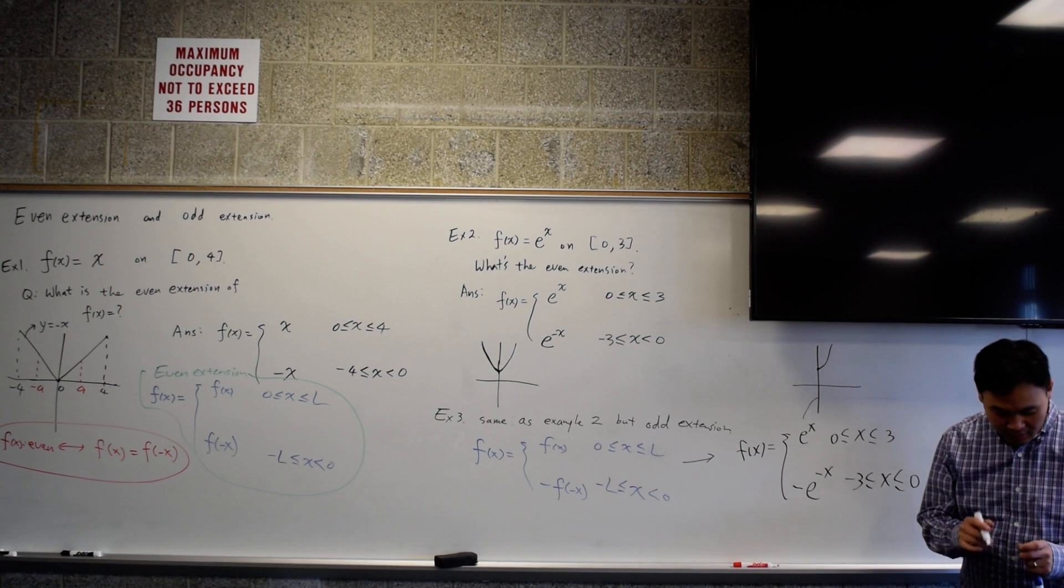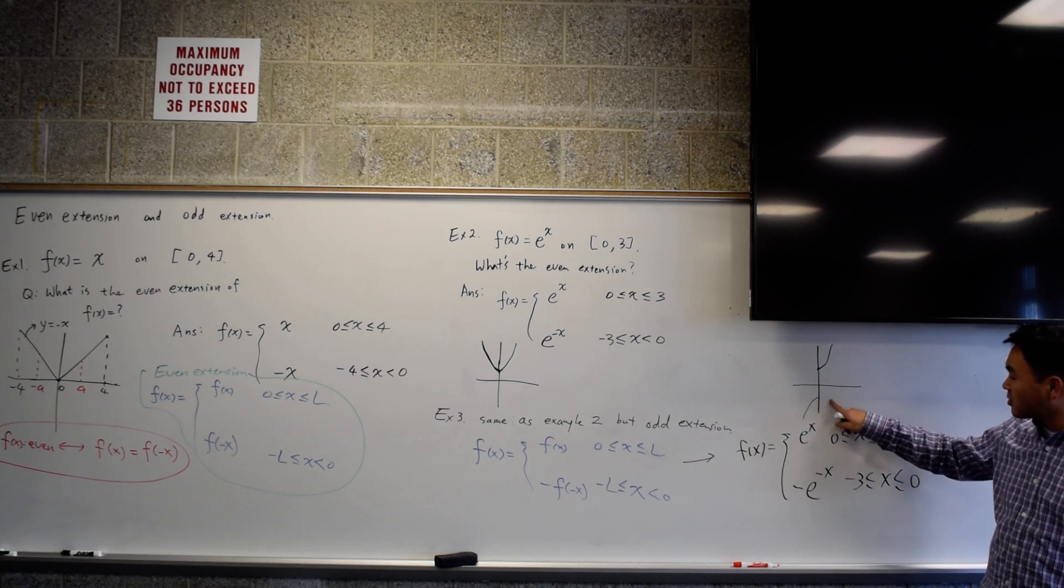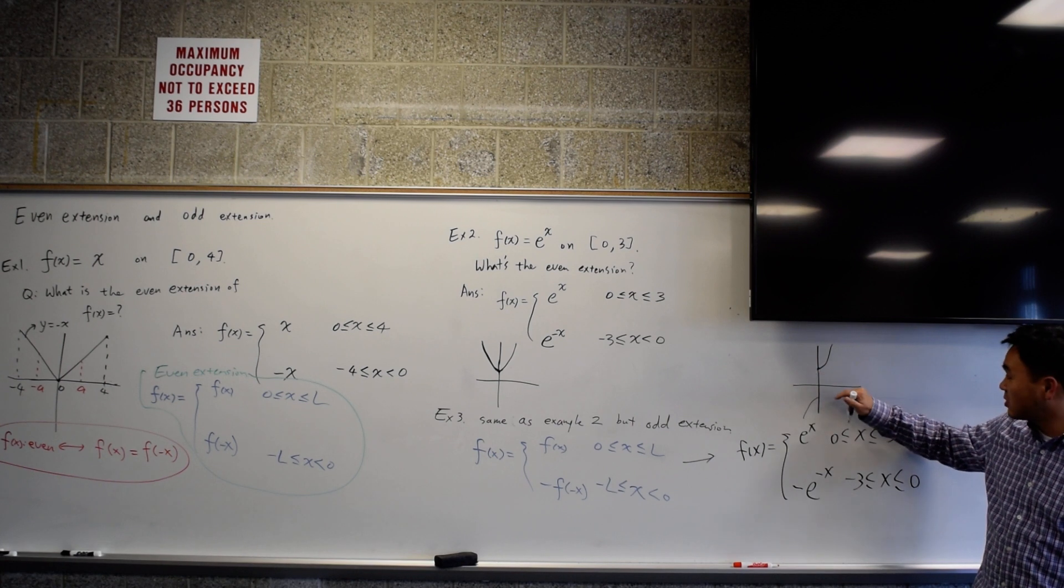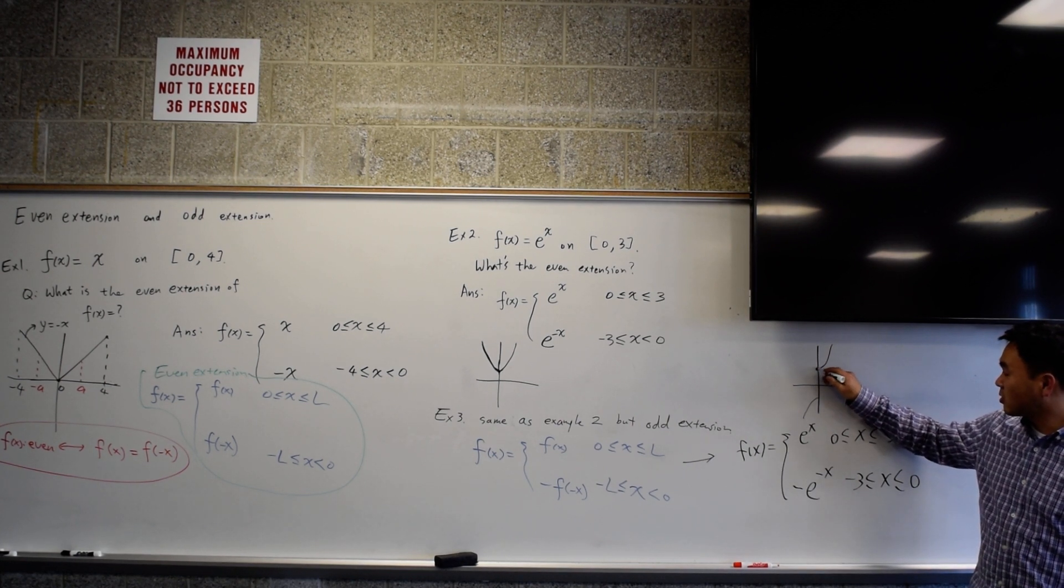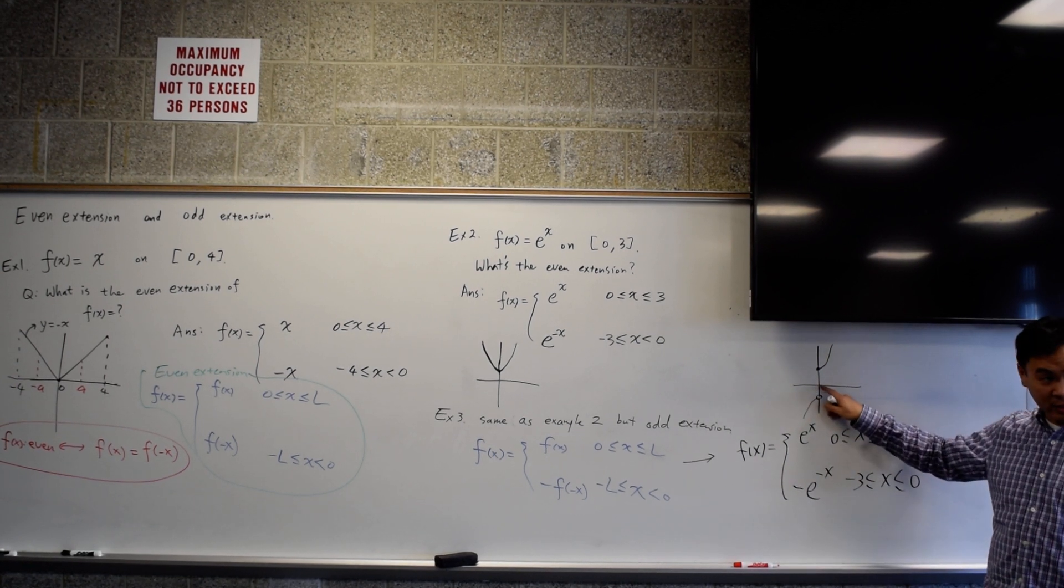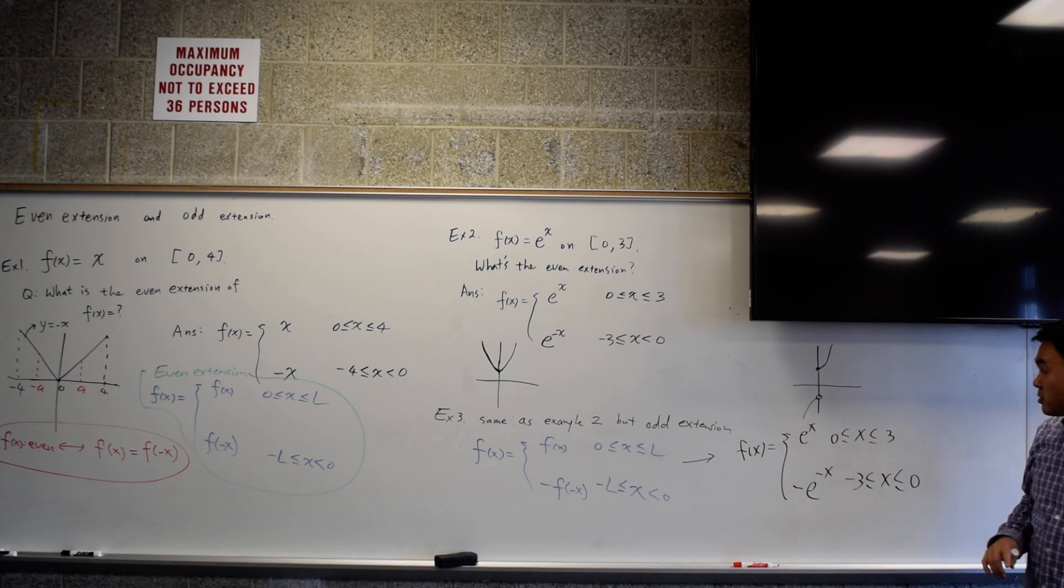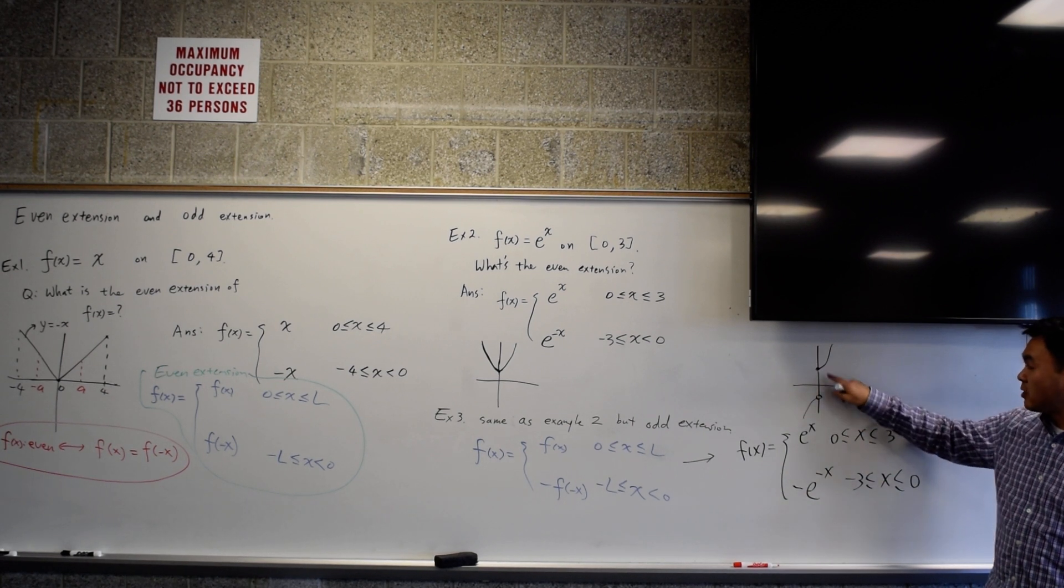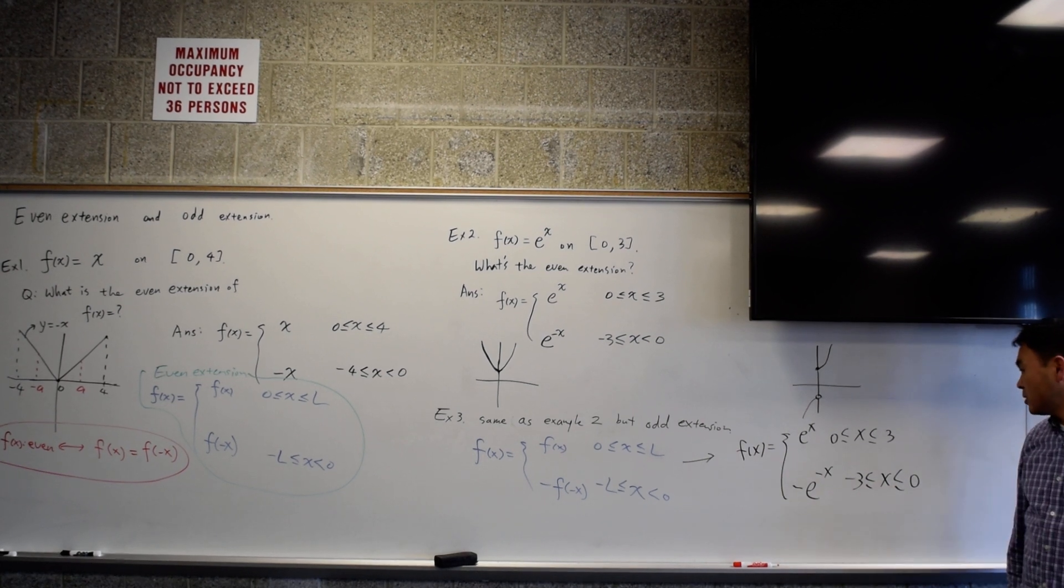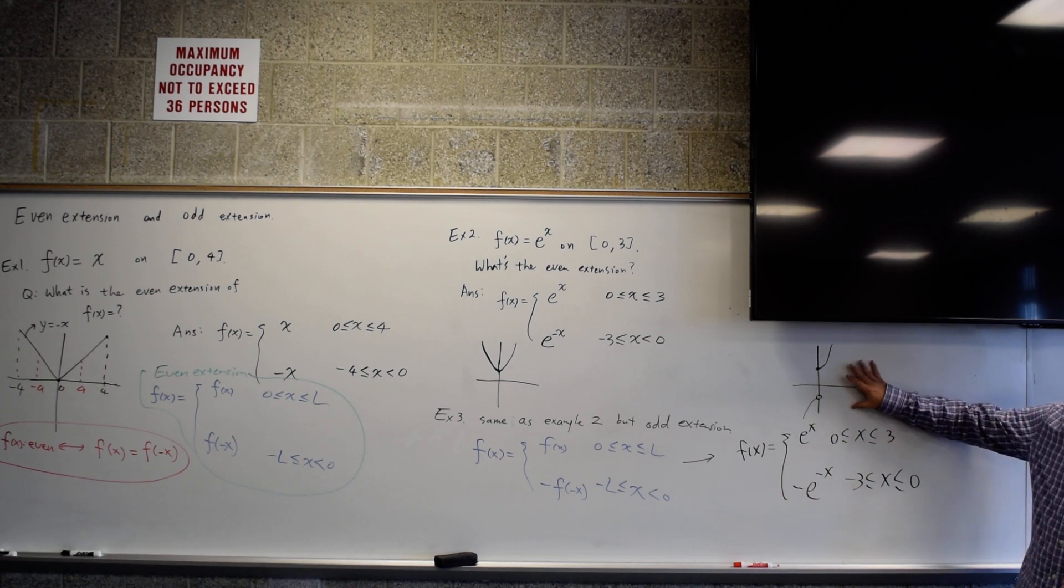There is a slight technicality here. The resulting function, you can't say it's odd because of this value here. Here's a closed circle and this one really has an open circle. So in terms of the graph, it's not perfectly symmetric with respect to the origin. If you want an odd extension, then they should either both be open circles or both be closed circles. So there's a slight technicality, but let's not think too much about that.